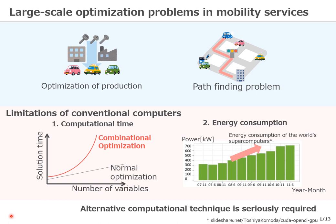As shown in this plot, in the case of a combinatorial optimization problem with discrete variables, the computational time increases exponentially, while the optimization problem with continuous variables scales just linearly. The energy consumption is another serious issue for solving large-scale problems. The average power consumption of world supercomputers continuously increases, and it is obvious that this is a problem for solving large-scale problems.